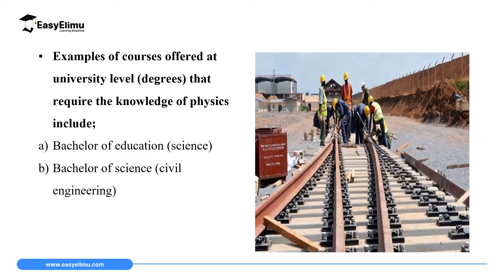There are several examples of courses offered at university level that require the knowledge of physics. One can take a Bachelor of Education Science — after undertaking this degree, you become a physics teacher. So if you are studying physics and you go to university to take a Bachelor of Education Science, you become a physics teacher, just like Mr. Albert.